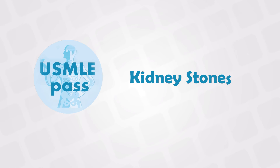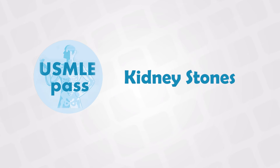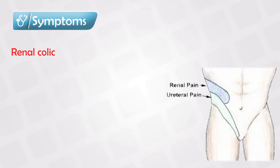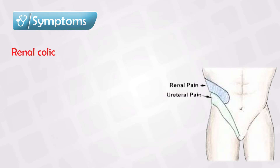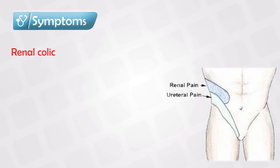Welcome back. In this video I'll teach you everything that you need to know about kidney stones. The most common presentation of kidney stones is renal colic, which means there is a fluctuating pain that is often very severe and radiates to the groin area. The patient will say that the pain is in the flank area of the abdomen and that they also feel the same pain in the groin area. This is most commonly unilateral.